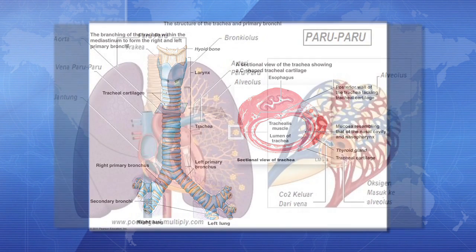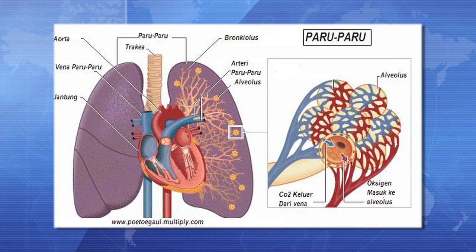Keenam, paru-paru terdiri atas dua bagian, yaitu paru-paru kanan dan paru-paru kiri. Paru-paru kanan memiliki tiga gelambir yang berukuran lebih besar daripada paru-paru sebelah kiri yang memiliki dua gelambir.